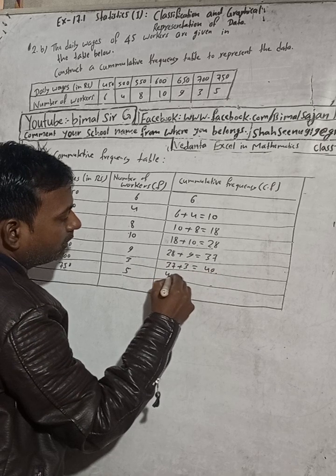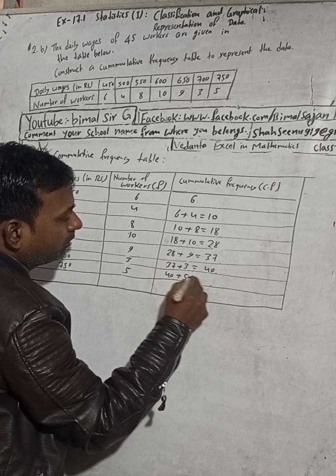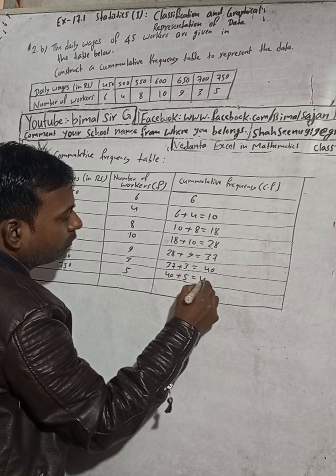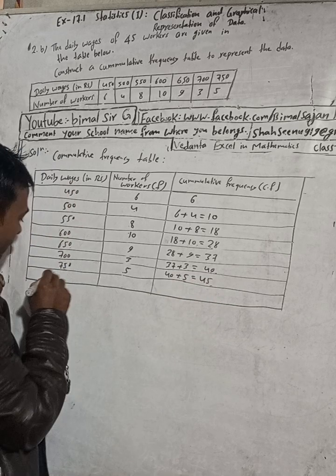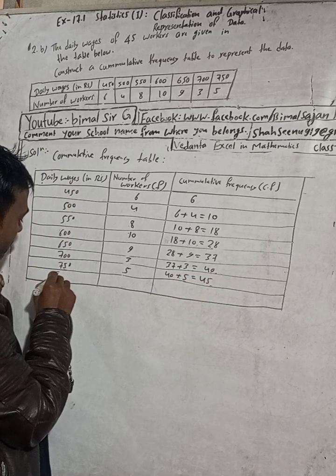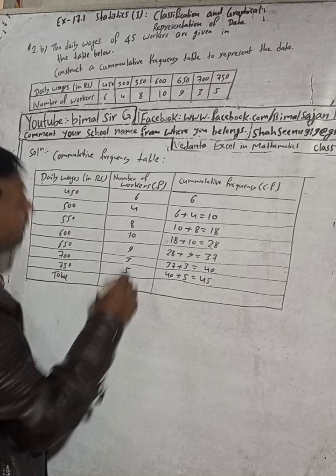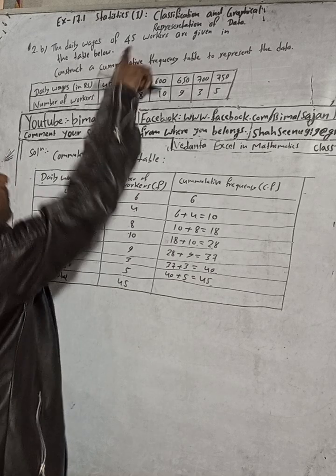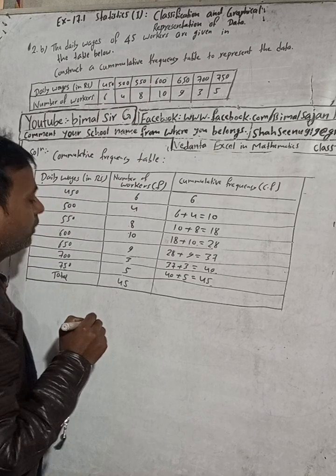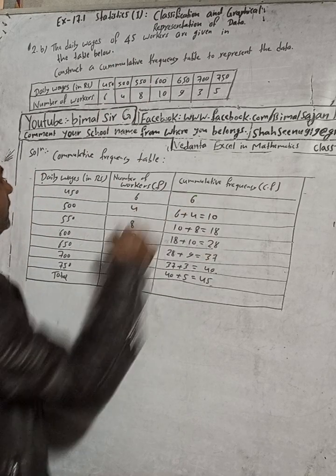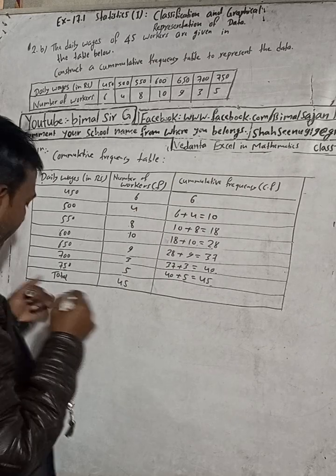Then 37 plus 3 equals 40, and 40 plus 5 equals 45. So the total is 45. You can write the total here as 45. So we got 45, and this is the cumulative frequency table.